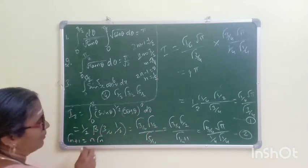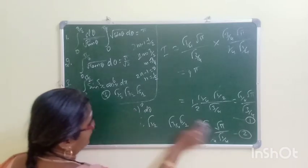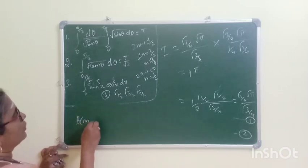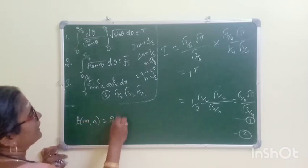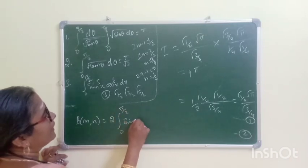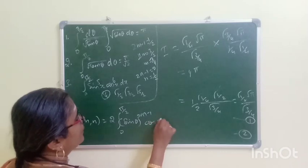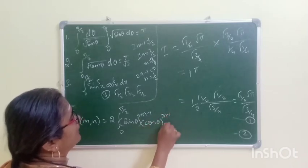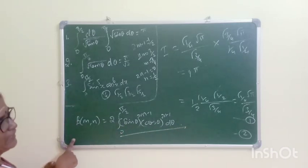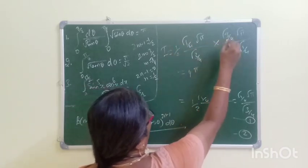I, β(m, n) equal to... I, β(m, n) equal to... I, β(m, n) equal to.